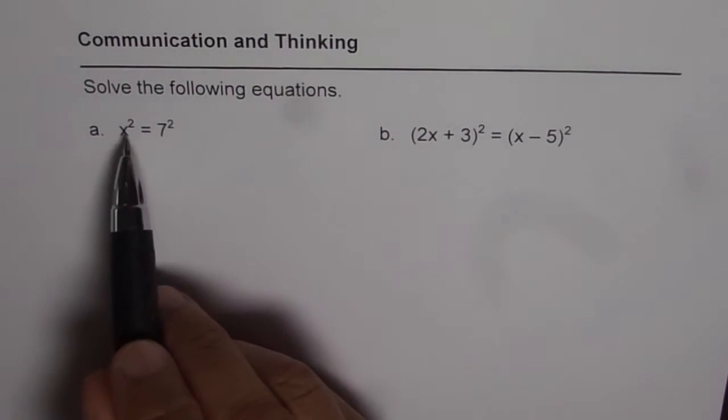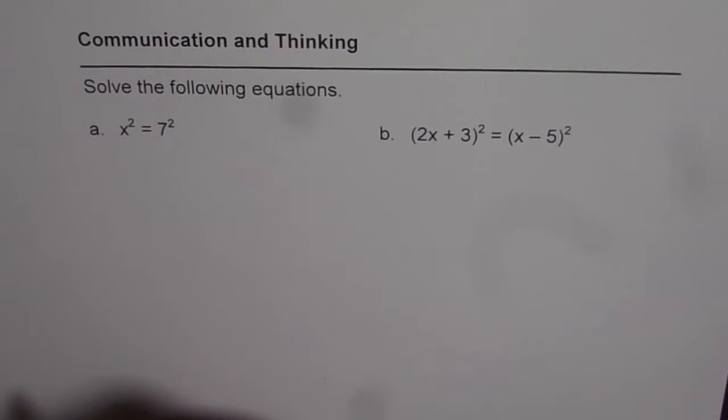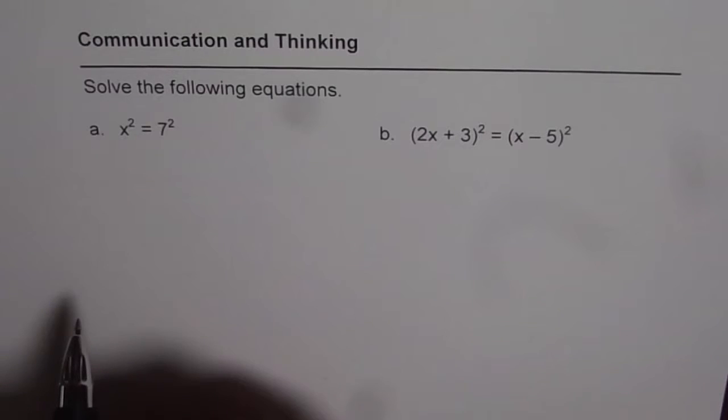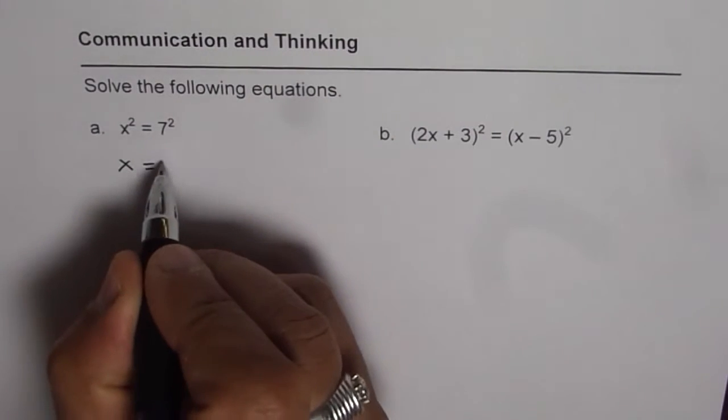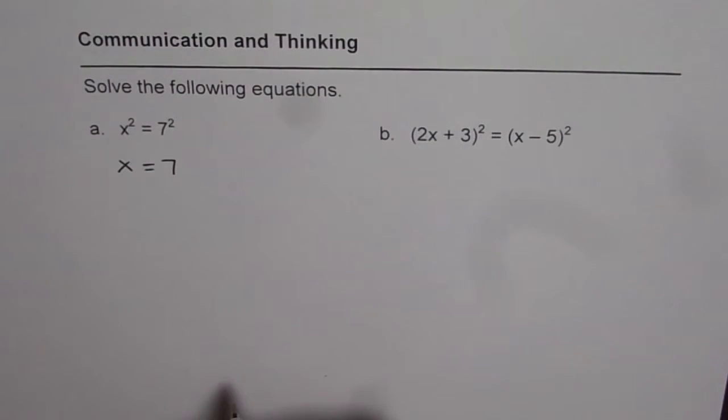Now we have x squared equals to 7 squared. What is the value of x? That is what we are interested in finding. Well on the first side we can say x squared equals to 7 squared. That means x is equal to 7. Well that is one solution. But is it a complete solution? That is the question. Is it the right solution? That is the second question.